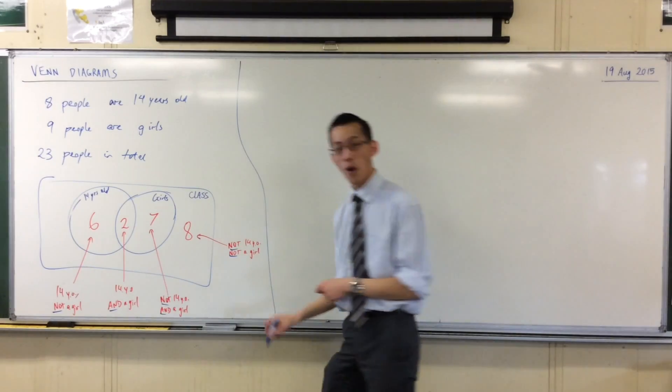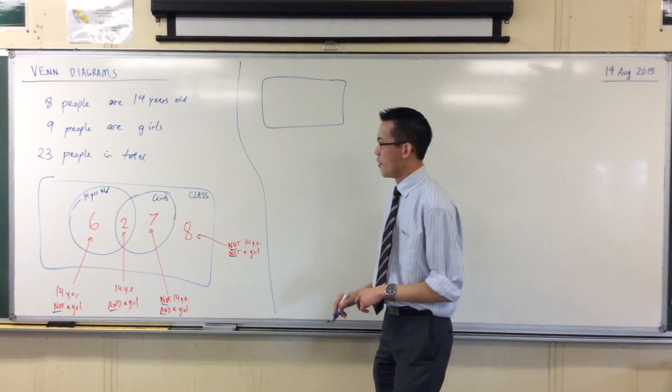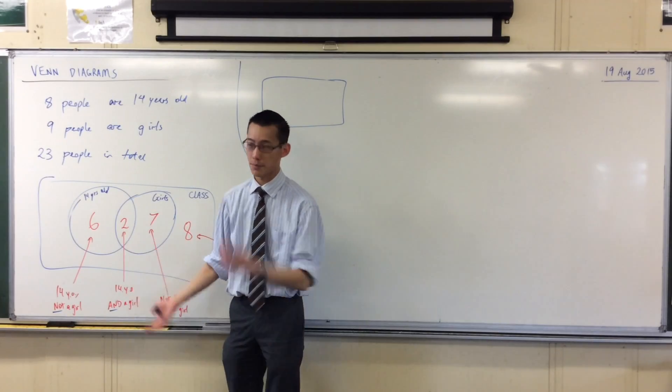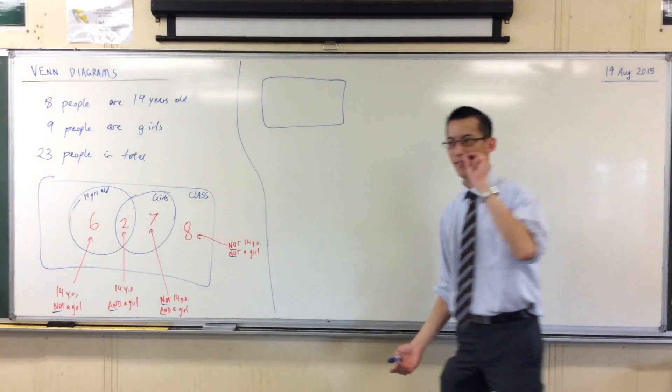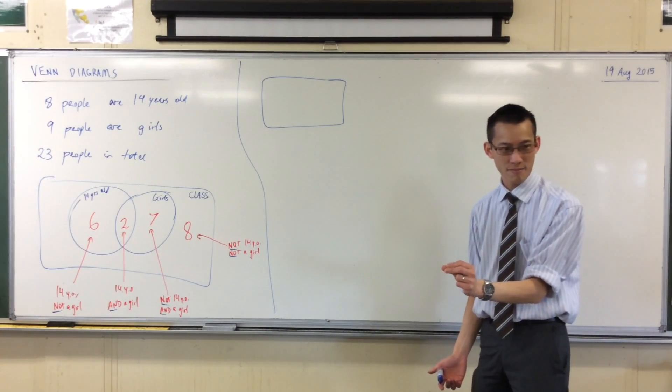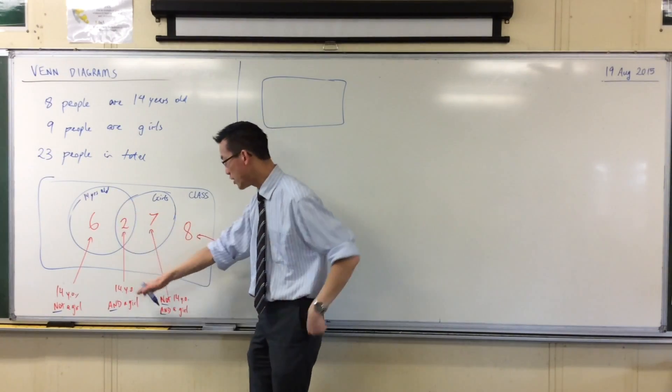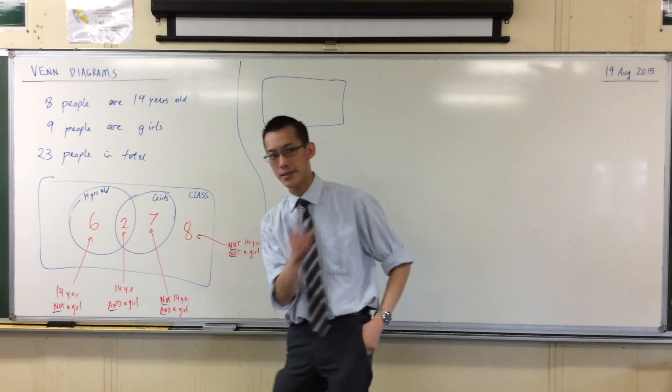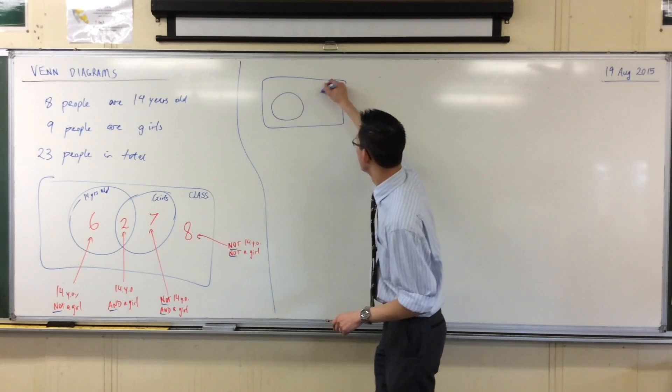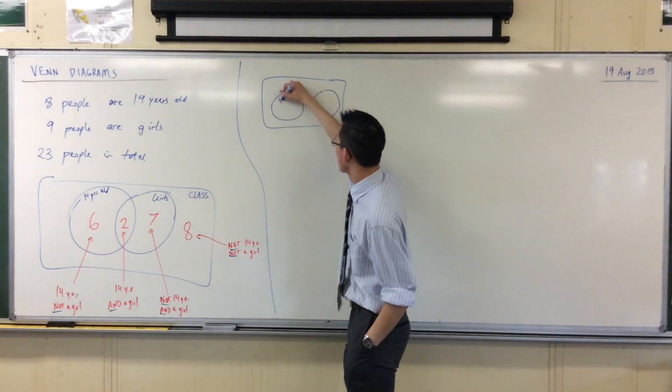Now underneath this Venn diagram I want you to draw a smaller one, still a rectangle, but it's going to be very simple this one. Because you'll notice I have this overlap in here and it just so happens I have two people. But if Delene and Courtney weren't here today, then there wouldn't be anyone in this overlap area. There will be no one who's 14 years old and a girl at the same time. So our diagram would look a little bit different. It would look like this. There's no overlap, do you see?